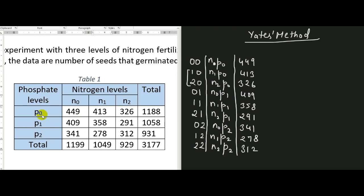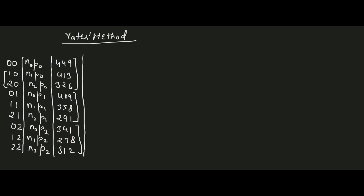We make triplets of these yields — the first three numbers together, then the next three, then the last three. The first three entries of the next column are found by adding the numbers in each triplet — that is, multiplying by the vector 1, 1, 1. So 449 plus 413 plus 326 equals 1188. The next triplet sum is 409 plus 358 plus 291, which equals 1058. And the last triplet sum is 341 plus 278 plus 312, which equals 931.